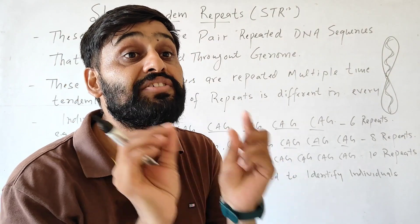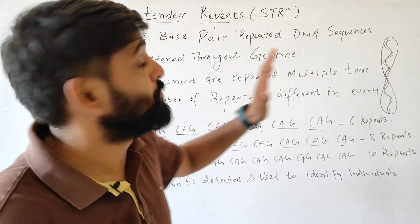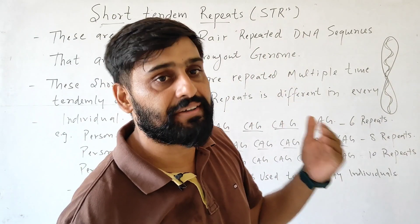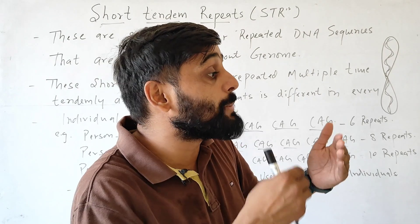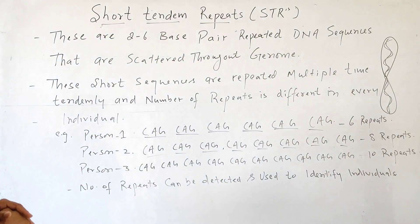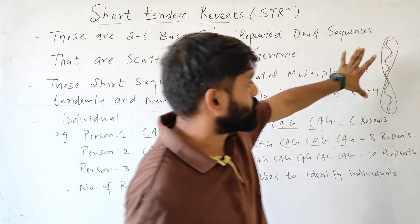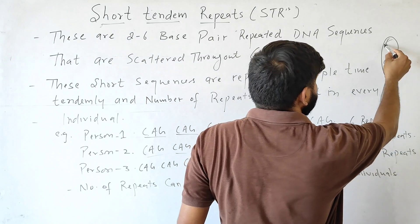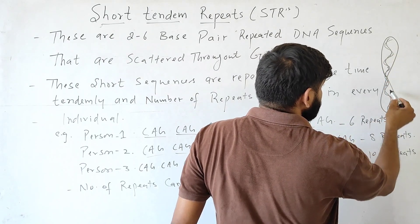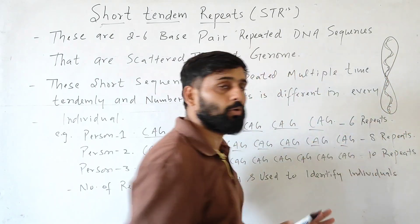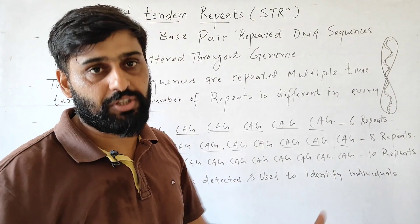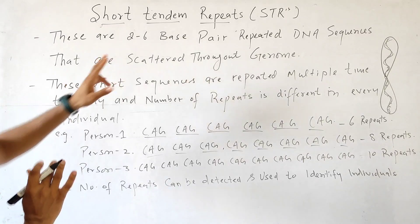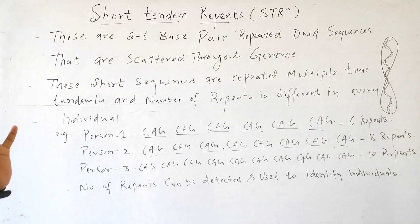Short tandem repeats are short DNA sequences, basically 2 to 6 base sequences, that are present in the genome. These sequences are repeated in the genome and are scattered throughout the chromosome. They don't have any specific location — they can be anywhere throughout the genome.